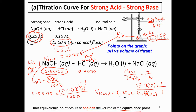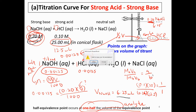You have to be very careful to look at the concentration given for the titrant and also the stoichiometry. Remember: the half-equivalence point is half of the volume of the analyte. That's all for half-equivalence points.